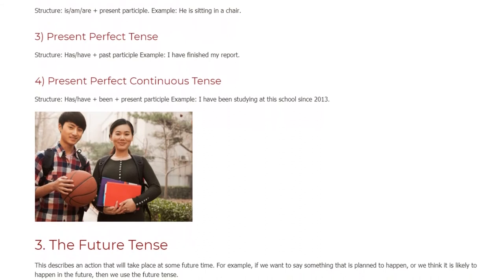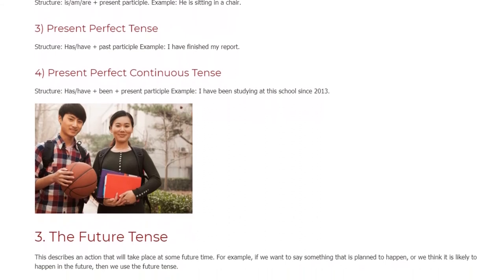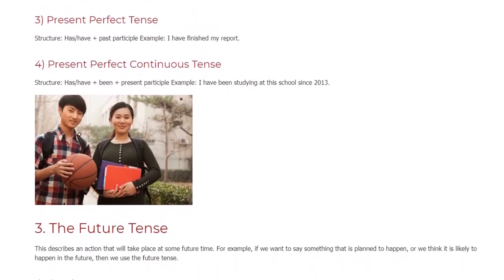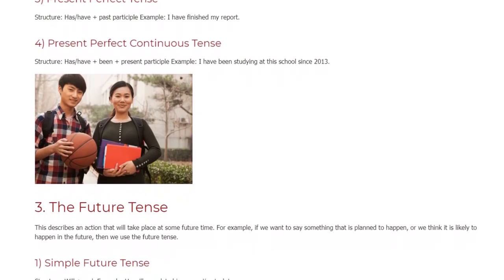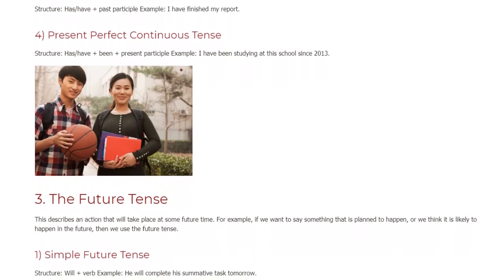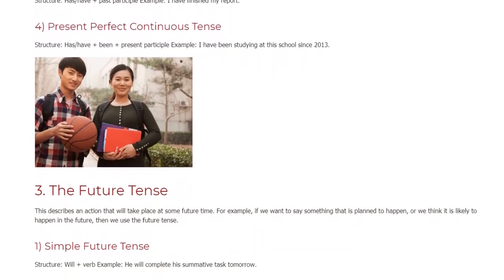3. Future Perfect Tense. Structure: Will have plus Past Participle, Am/is/are plus going to have plus Past Participle. Example: She will have completed the English course by the end of this year.